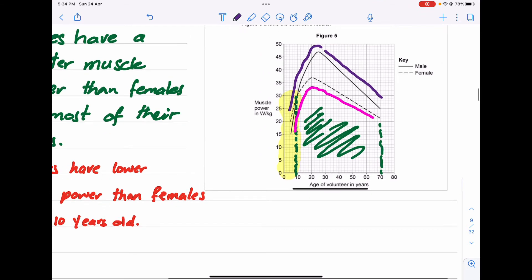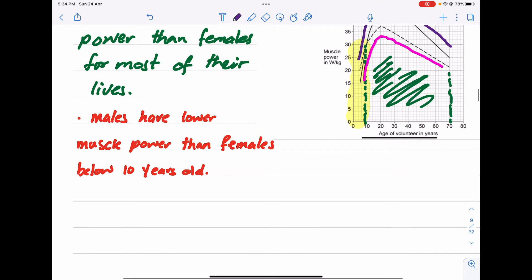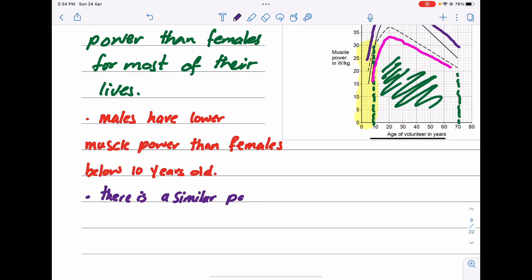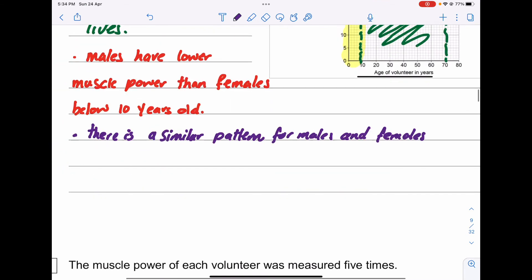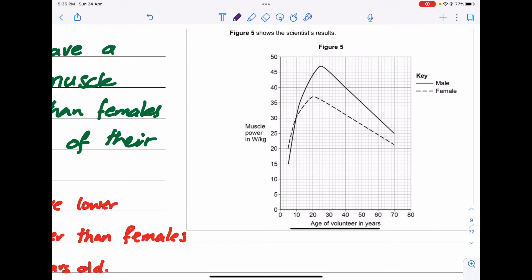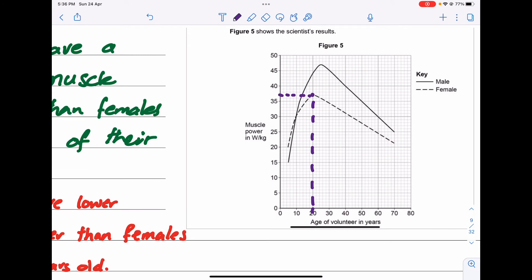There is a similar pattern for males and females as age increases. Looking at the peak points, at age 20 for females muscle power is approximately 37 watts per kilogram. At age 25 for males, the maximum power is 47 watts per kilogram.